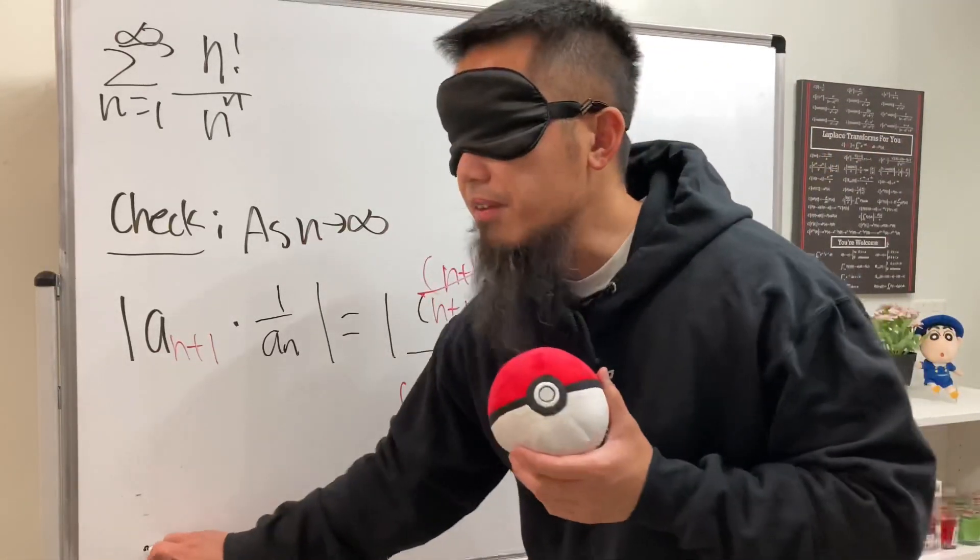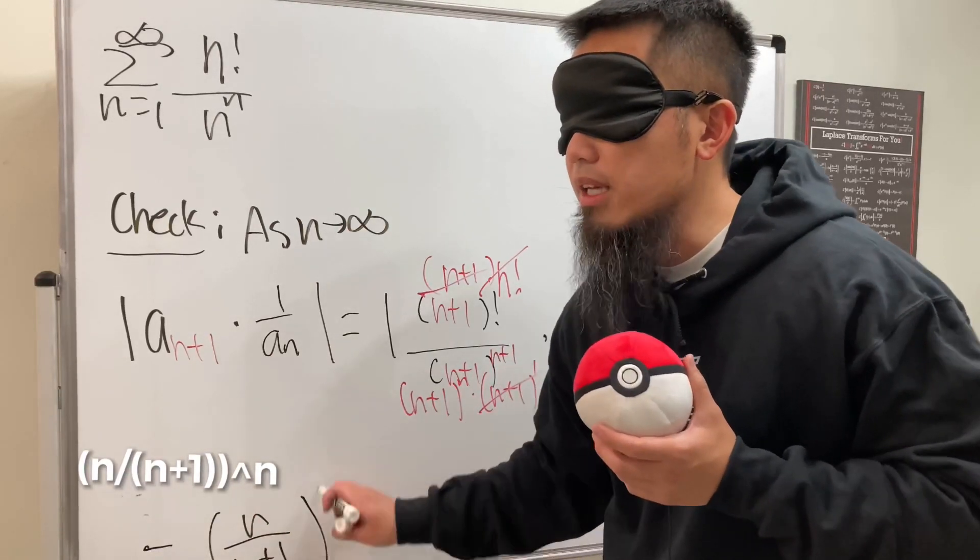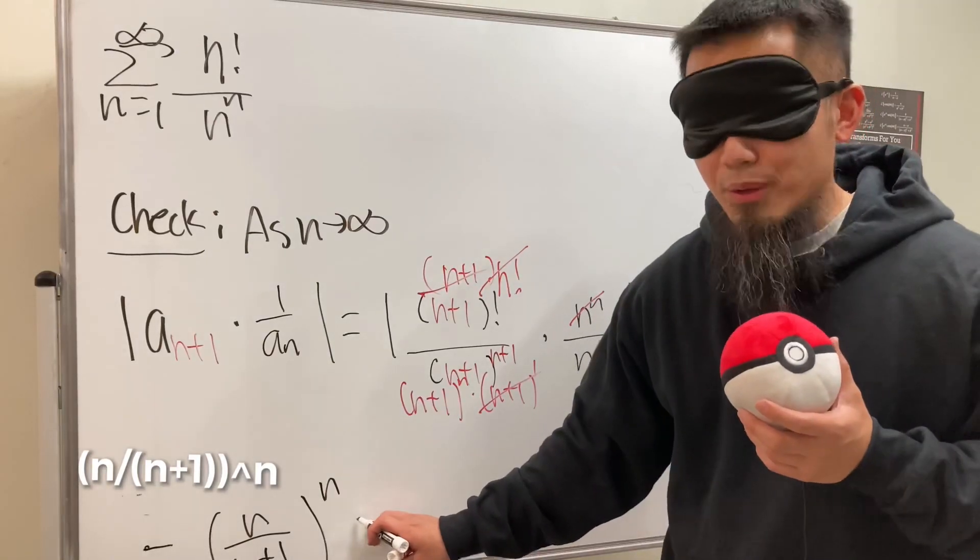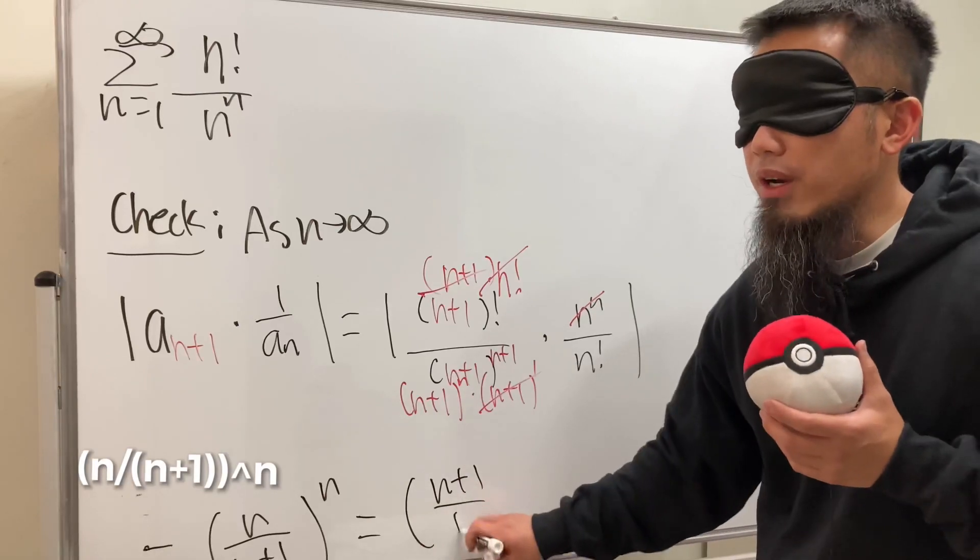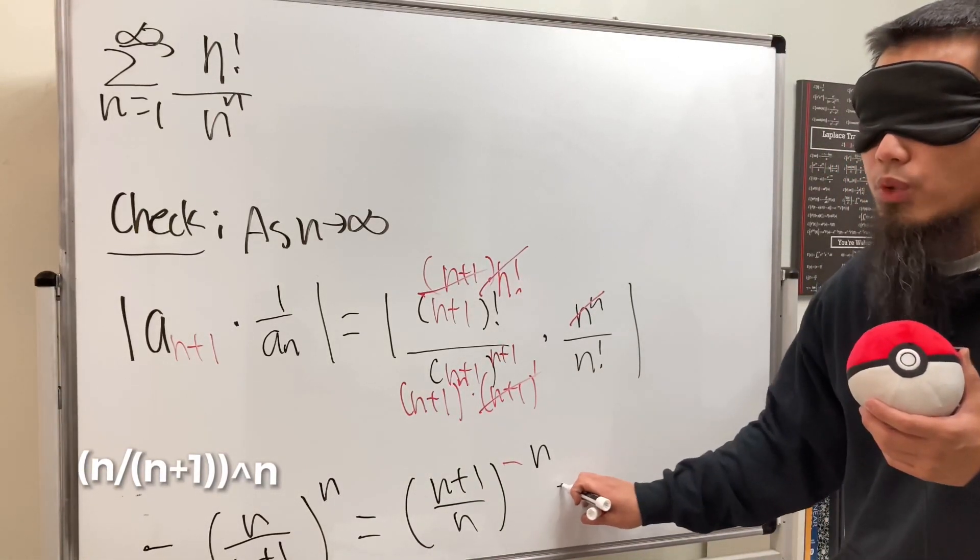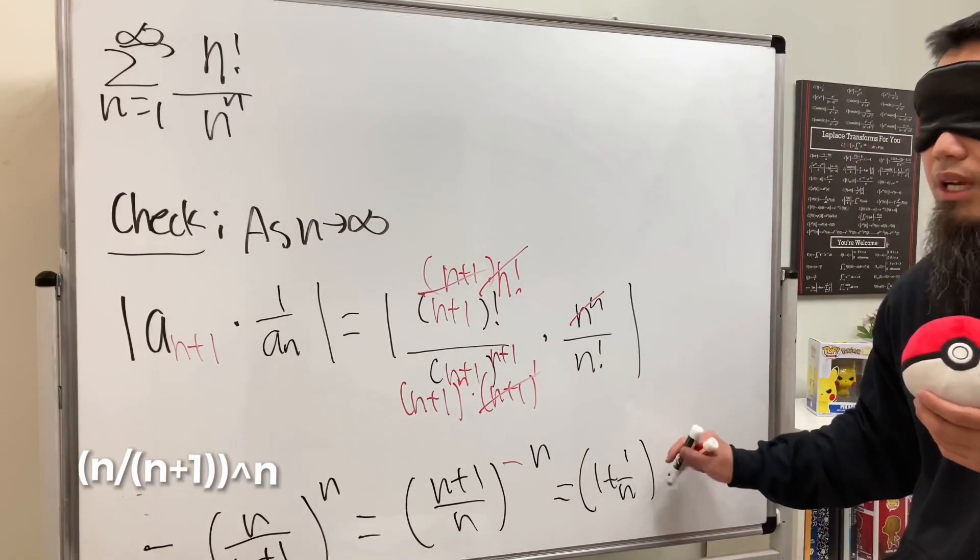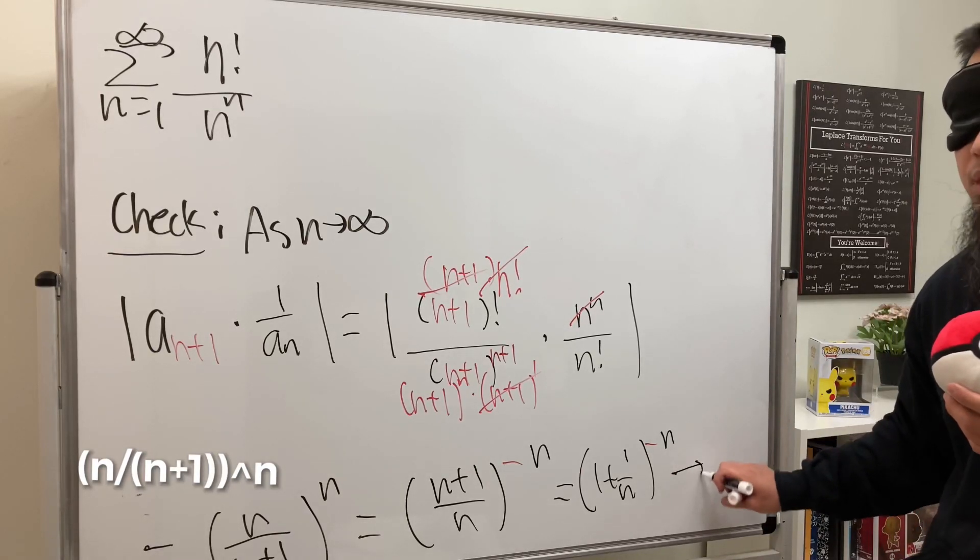So we can come here and say we have (n/(n+1)) and put the exponent right here. Well, you are going to do the following: do the reciprocal of the inside, becomes (n+1)/n, and then remember to negate the exponent so we have negative n. And this way we can write this as (1 + 1/n) raised to the negative n.